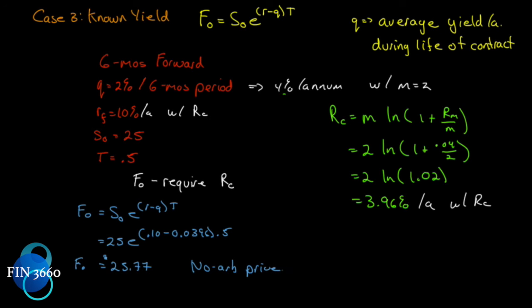So let's review before we move forward. What have we done? We have done a no-income investment asset, we have done a known income investment asset, and we have done a known yield investment asset. So we've come up with the futures price at the time of contract inception.